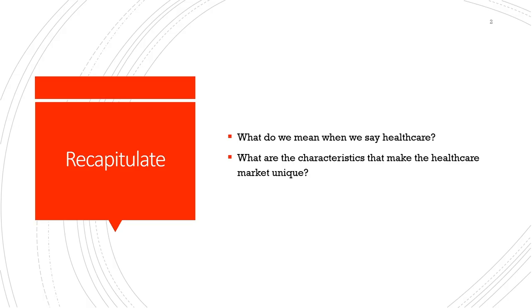We basically asked two questions in the last class. One is what do we mean when we say healthcare. By healthcare, we refer to a whole lot of things — from physicians to medicines to hospitals to non-hospital institutions to non-physician workforce. We also refer to rules and regulations and licensing issues that are part of the healthcare markets. So by healthcare, we do not just refer to medicines and physicians or hospitals, but there are a whole lot of composite indicators that constitute healthcare.